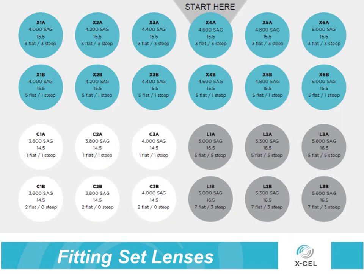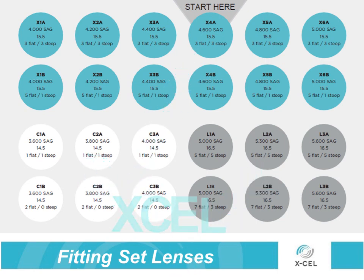The 24-lens diagnostic fitting set contains 12 15.5 X lenses, 6 14.5 C lenses, and 6 16.5 L lenses. The lenses are organized by sagittal depth and each sag comes with two edge options. This allows practitioners to compare edges to see which one fits most appropriately, and also allows two eyes with similar sagittal depths to be fit at the same time.